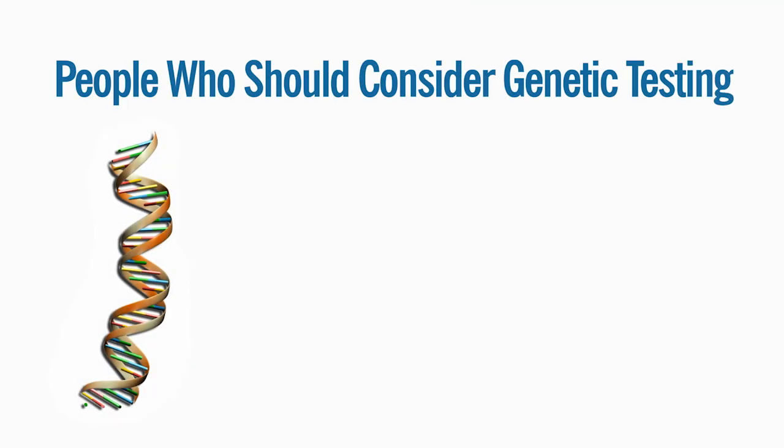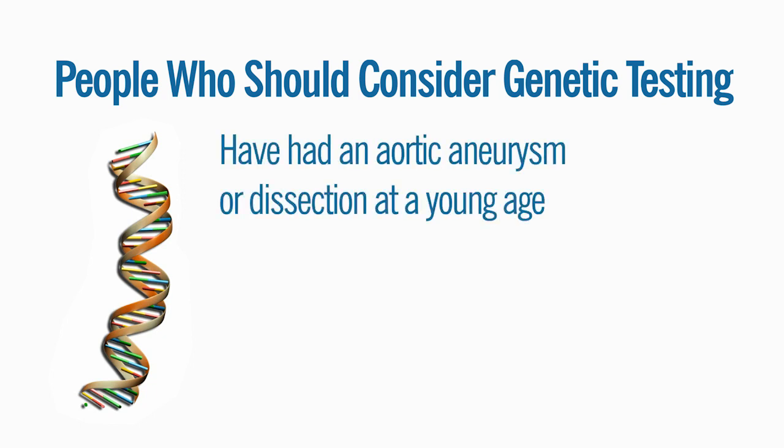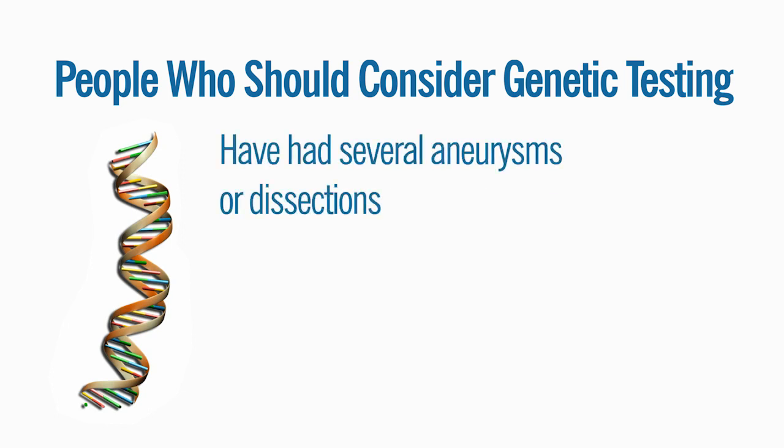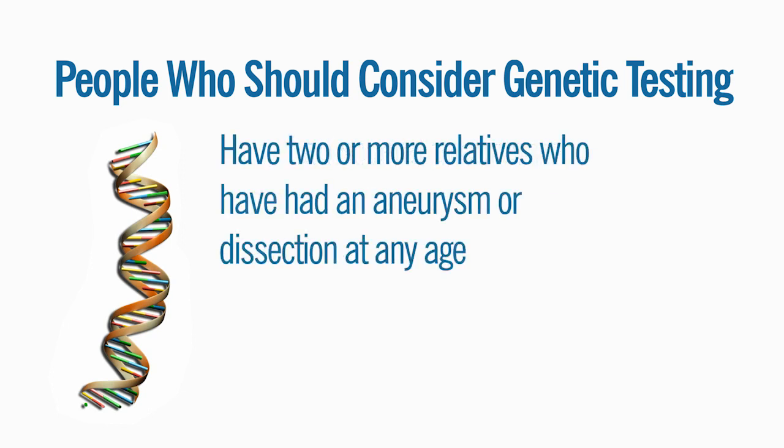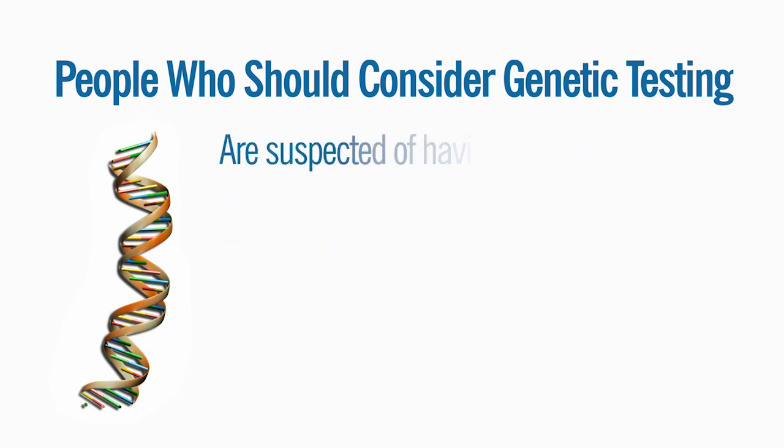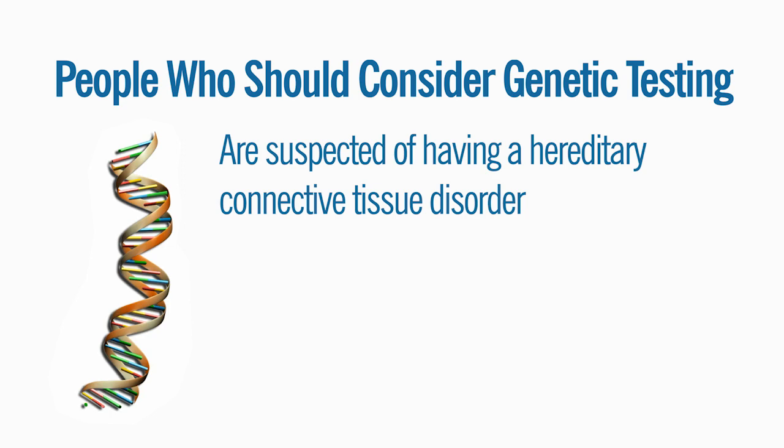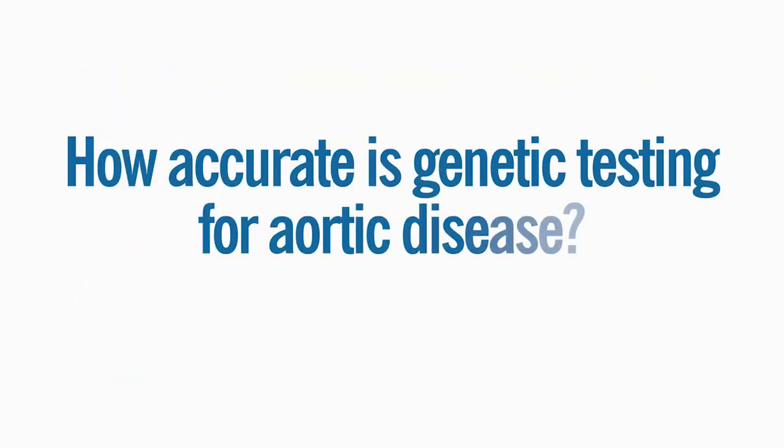People who should consider genetic testing include those who have had an aortic aneurysm or dissection at a young age, have had several aneurysms or dissections, have two or more relatives who have had an aneurysm or dissection at any age, or are suspected of having a hereditary connective tissue disorder.